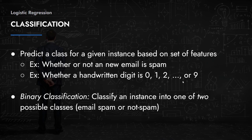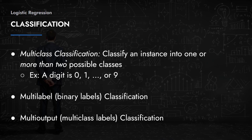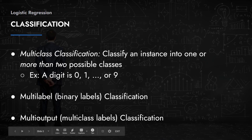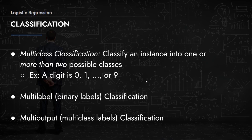Multi-class classification involves classifying an instance into one of more than two possible classes, like the digit example. There are also multi-label and multi-output classification types, but those are more advanced topics. A simple understanding of binary classification suffices for most problems, but these are available for reference if you want to learn more.